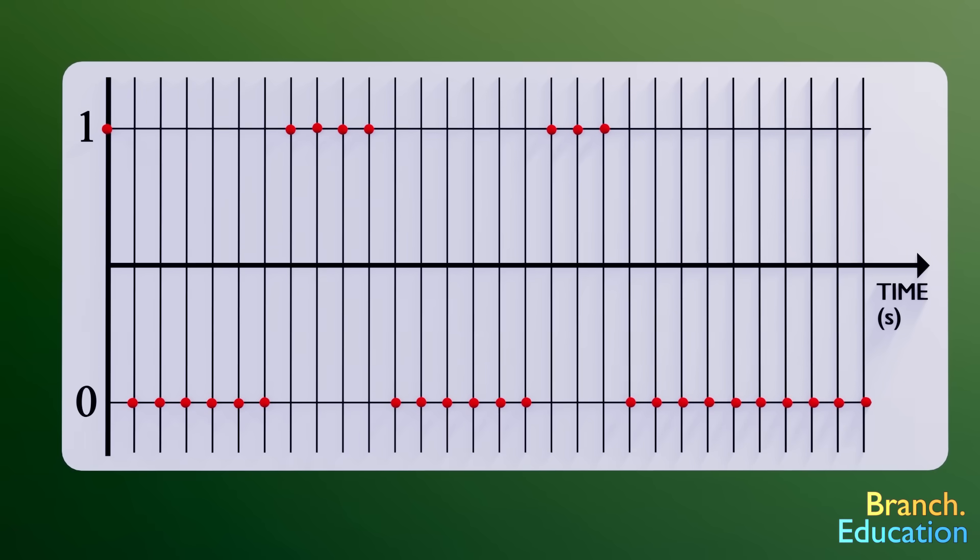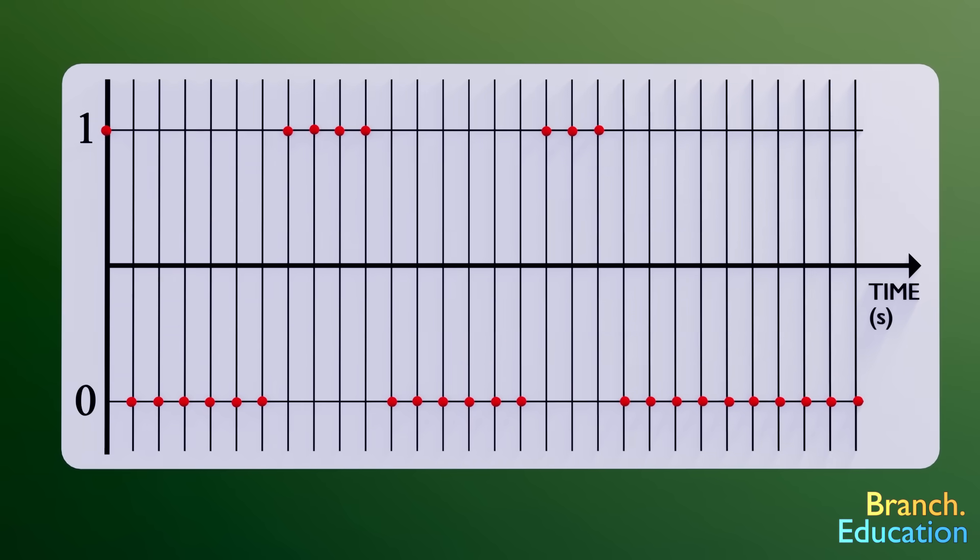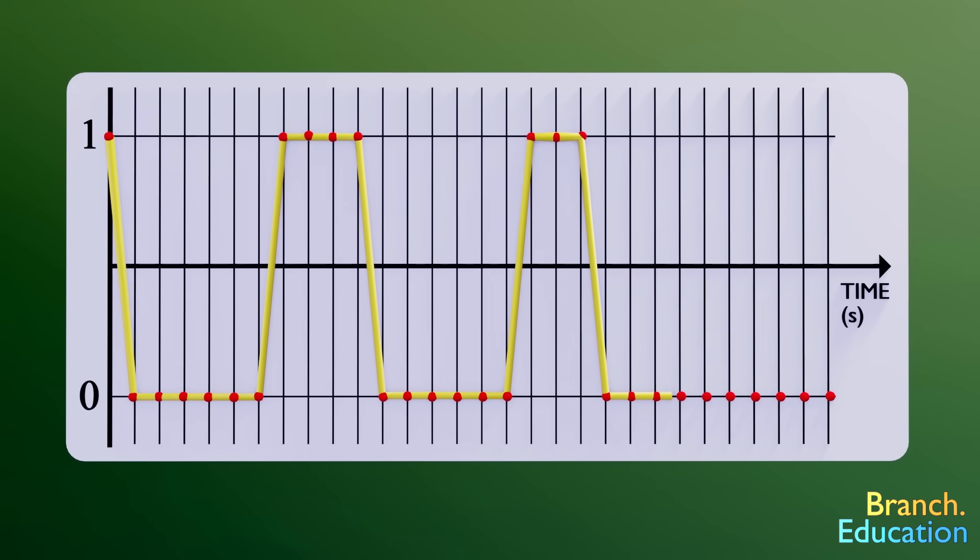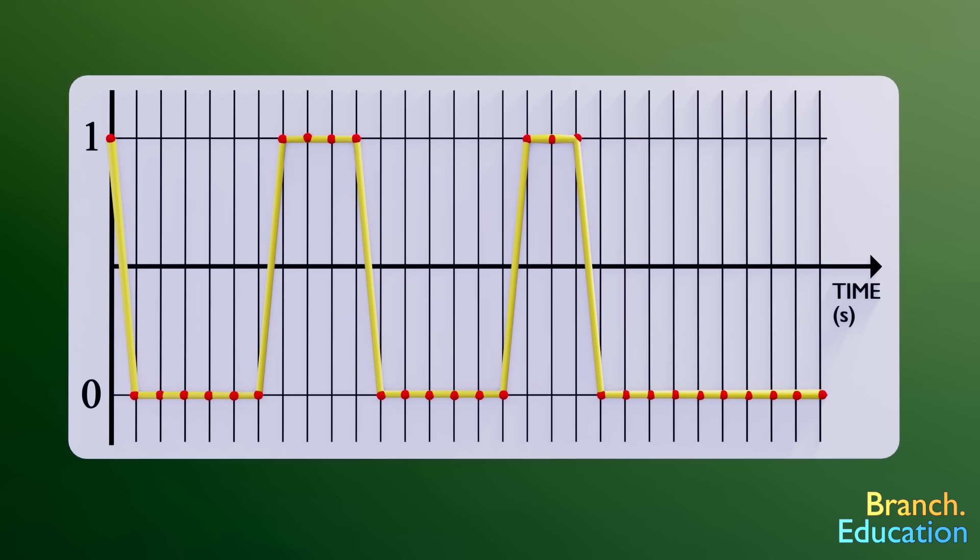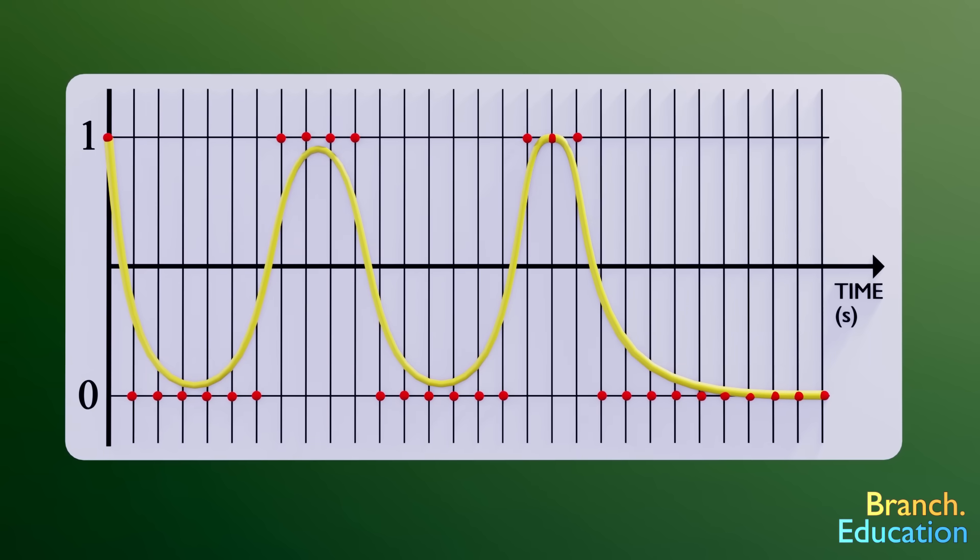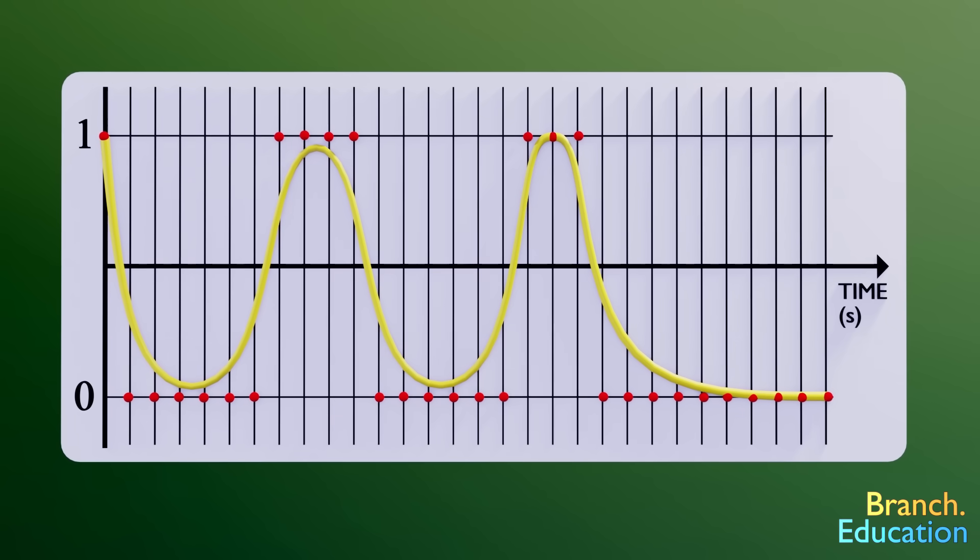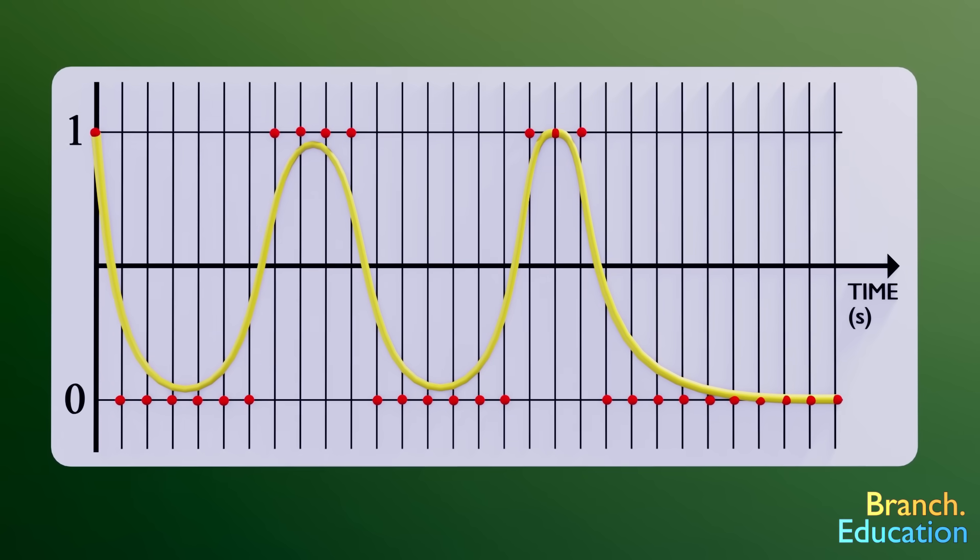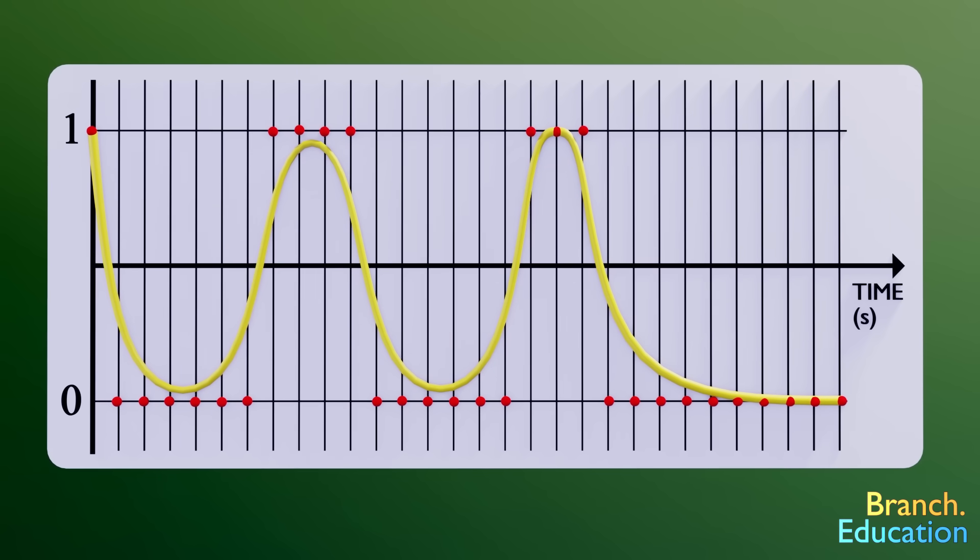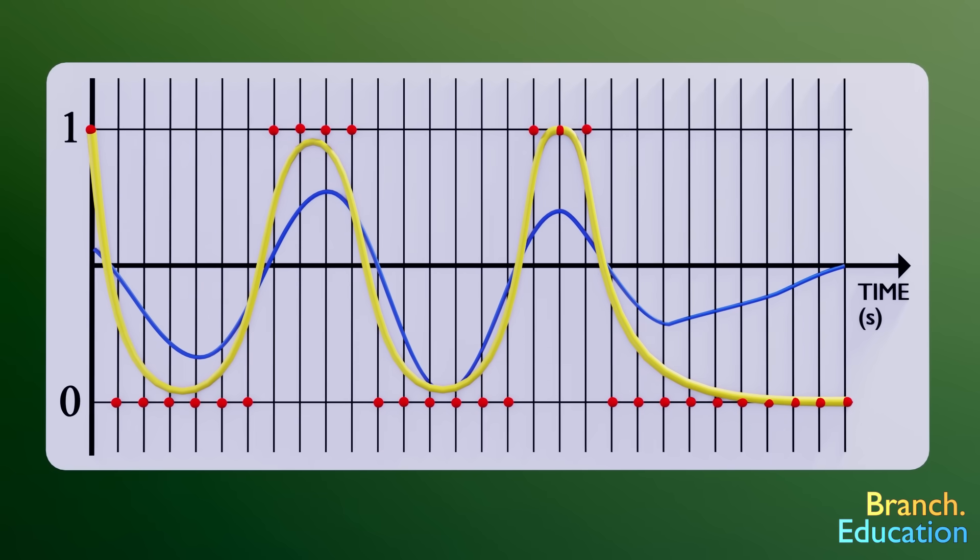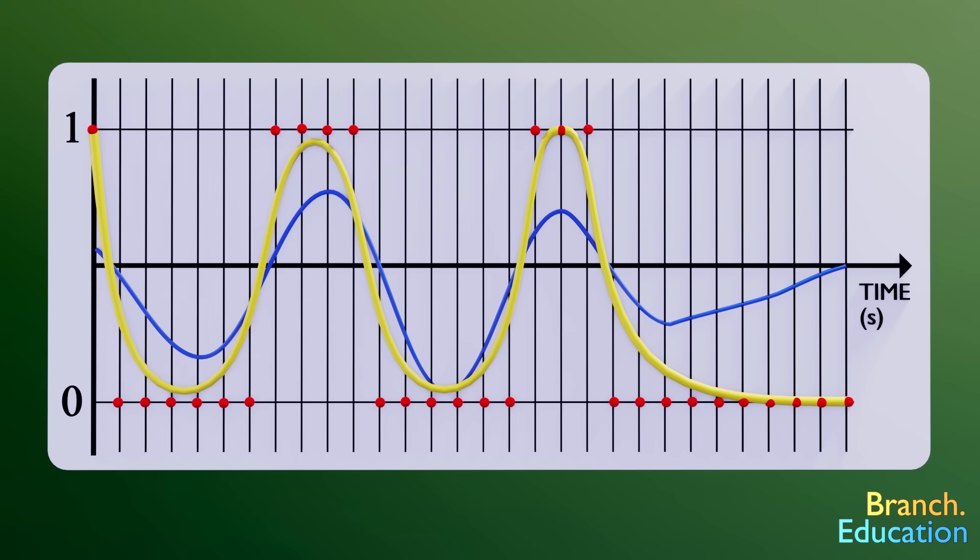But how accurate is our analog to digital conversion? To check, we reassemble the graph using these values, 1's up here, 0's down here and smooth the line between the points. Now we have an analog waveform created from the digital data which was created from the original audio waveform and this recreation looks nothing like the original audio and thus 1 bit isn't good enough.